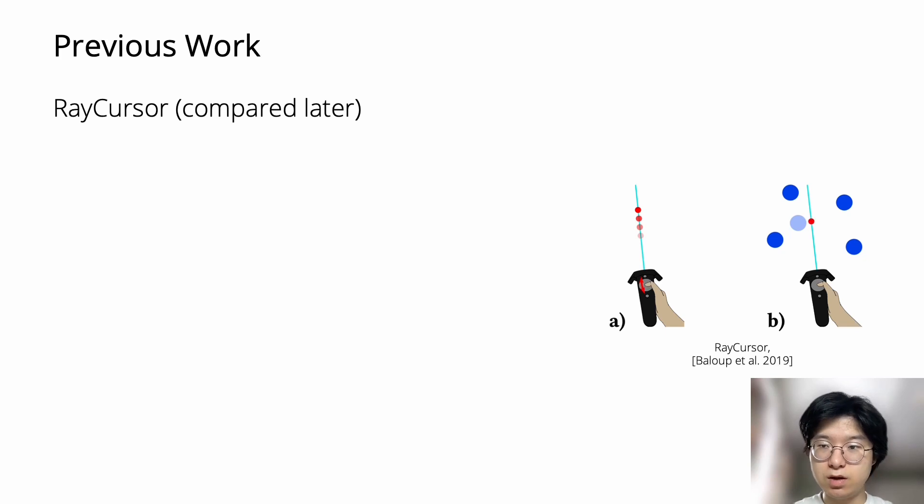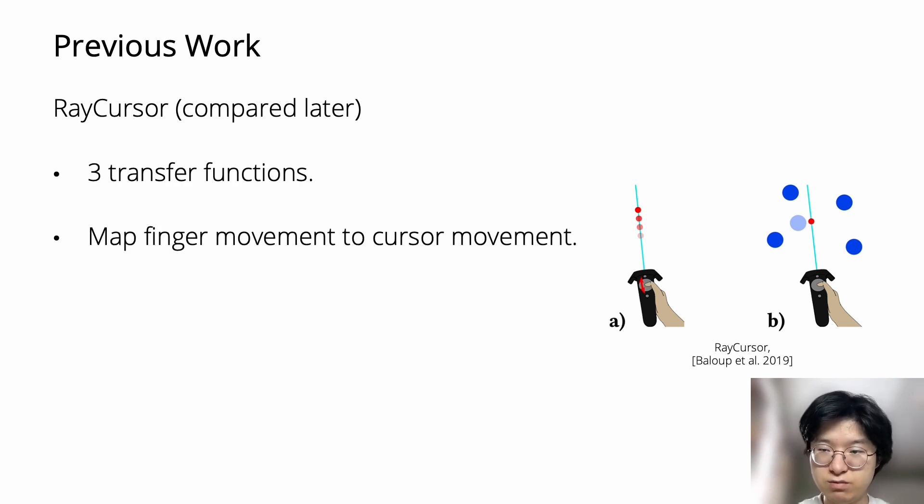I'm going to talk more about RayCursor, a competing technique which we compare later in the user study. RayCursor is an improvement of ray casting. With a cursor on the ray, RayCursor explores three different transfer functions to map finger movement on the touchpad of a VR controller to the cursor movement along the ray, and the closest target will be selected.